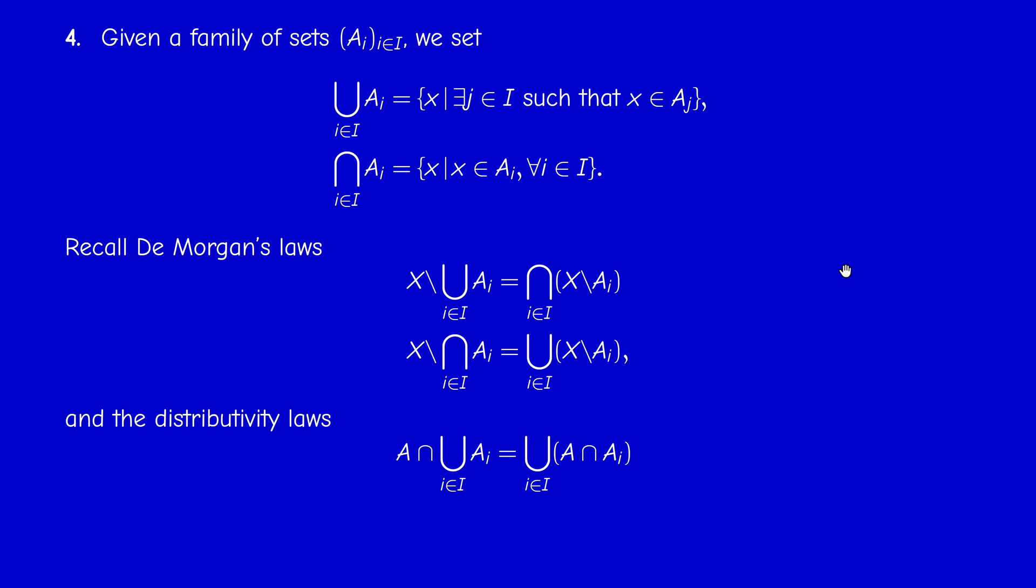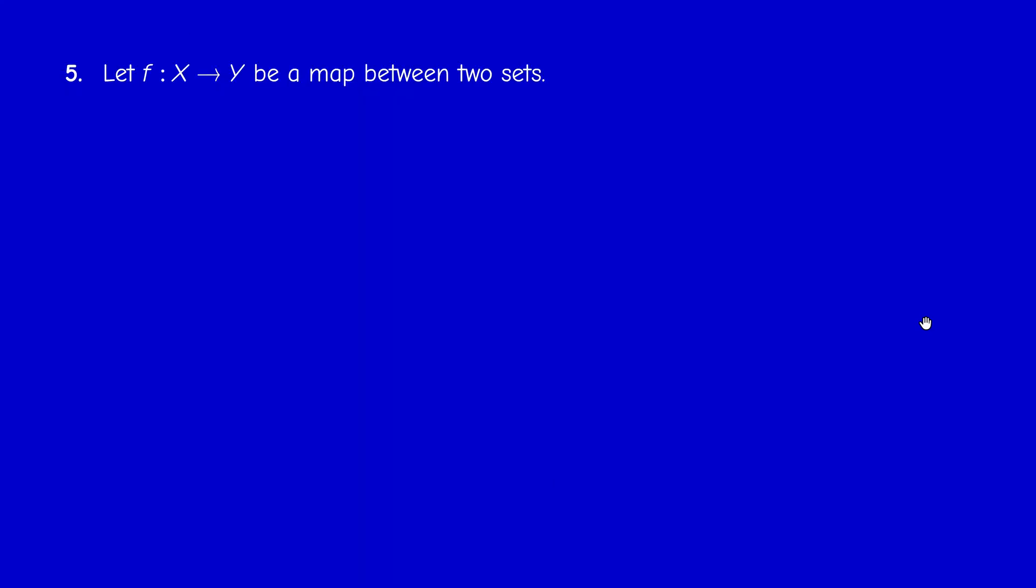We have the distributivity laws. A intersected with the union is the union of the intersections. And similarly for the union, A union and intersection is the intersection of the unions. These are set theoretic identities that are very useful in topology.